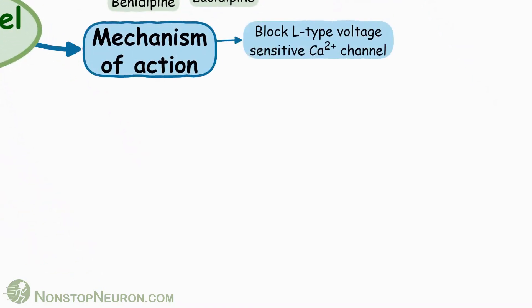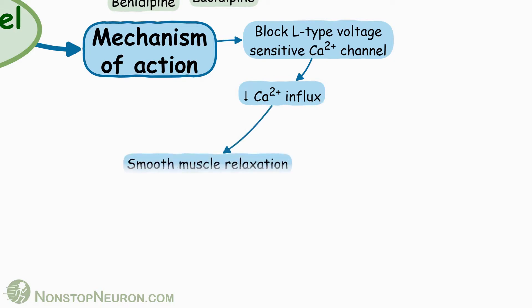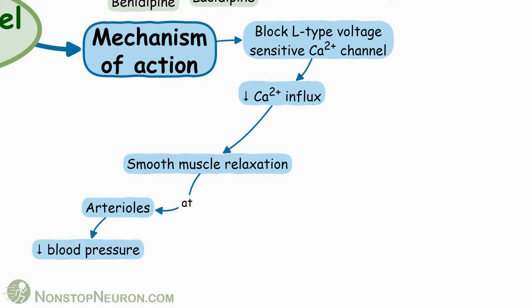Now let's see their mechanism of action. All calcium channel blockers block the L-type voltage-sensitive calcium channels. This blockade decreases calcium influx during action potential, leading to smooth muscle relaxation. Relaxation of arterioles is more prominent, leading to decreased blood pressure. Smooth muscles of the bronchi and uterus are also relaxed.